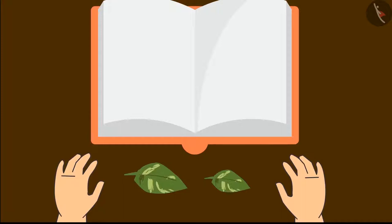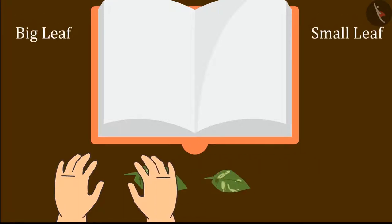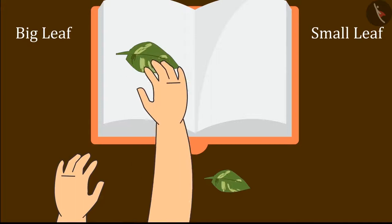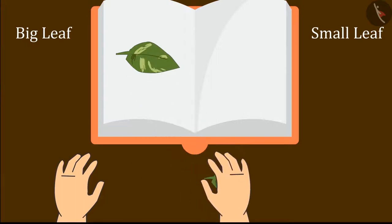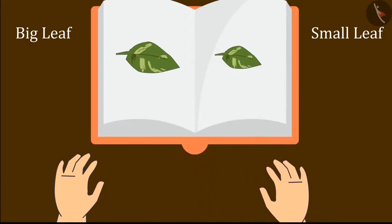First, I will paste the leaves. Here are the two leaves — we will put the big leaf here and the small leaf here. Chotu pasted both the leaves.